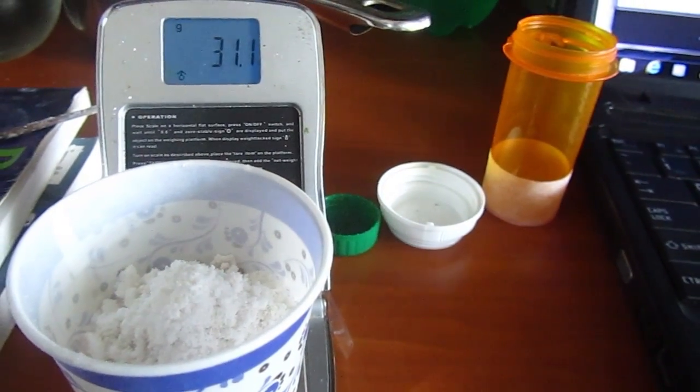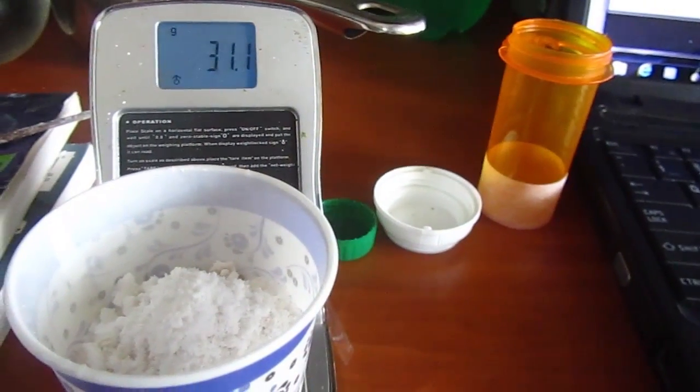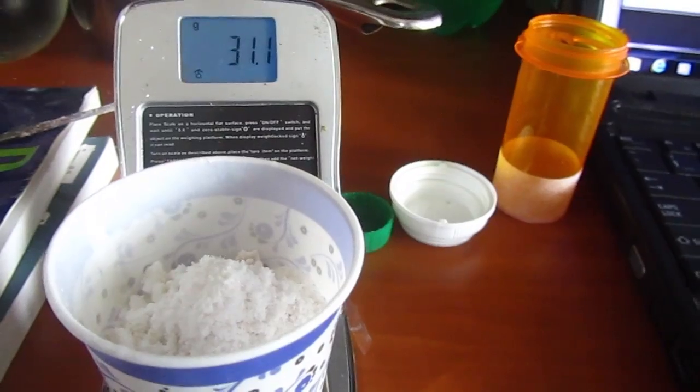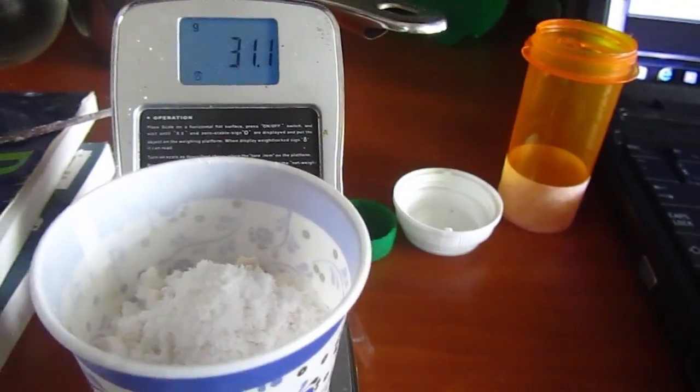Okay, there we go. We have over an ounce of ammonium chloride from 300 milliliters of 10% ammonia solution and 100 milliliters of a 30% hydrochloric acid solution.